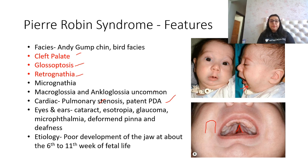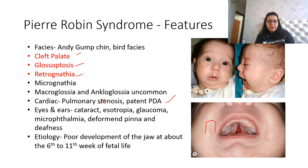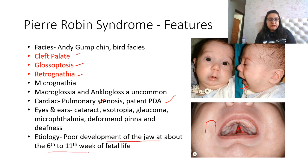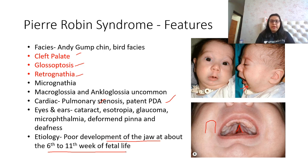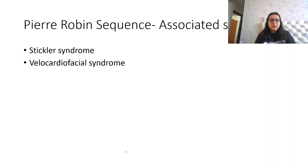Regarding etiology, many theories have been proposed, but the most important and reliable one is poor development of the jaw at approximately the sixth to eleventh week of fetal life. This is the most common etiology, and this is what you should remember for Pierre Robin syndrome.